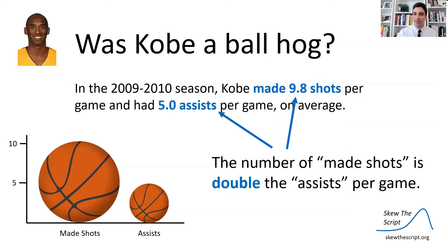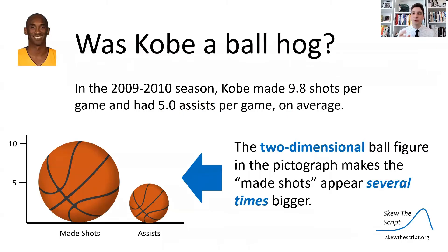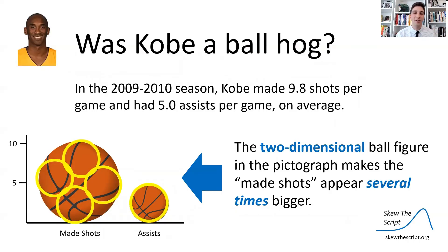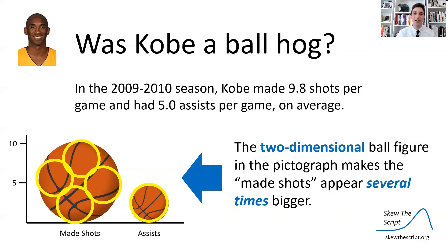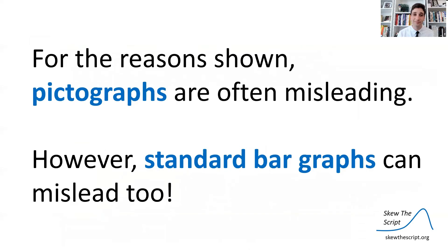The number of made shots per game is almost double his assists per game, so the graphic should show made shots as roughly double. But because we're using a two-dimensional ball figure that varies in both height and width, the made shots appears several times bigger — not just double. The area of assists, projected onto made shots, shows four or more times the area. If we use a regular bar plot instead, we only vary bar heights, so made shots is truly double the assists — giving us a more transparent data graphic. For these reasons, pictographs are often misleading.